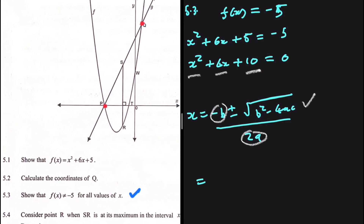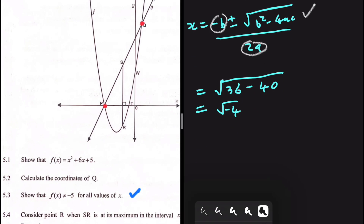Computing the discriminant: b is 6, so b squared is 36. Then 4ac: a is 1, c is 10, so 4ac is 40. Therefore b squared minus 4ac equals 36 minus 40, which is minus 4. Since we have the square root of minus 4, which cannot be computed, f of x can never equal minus 5.